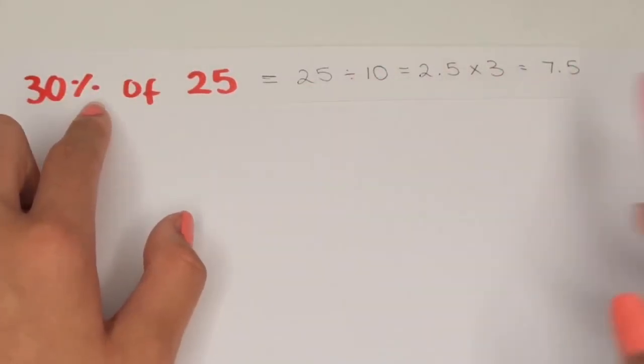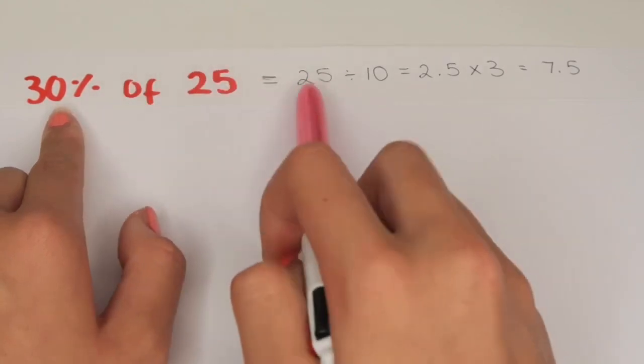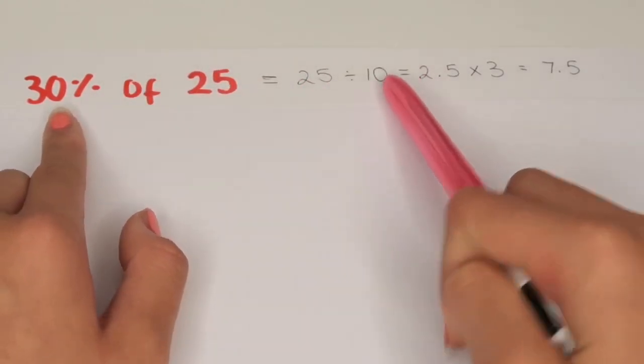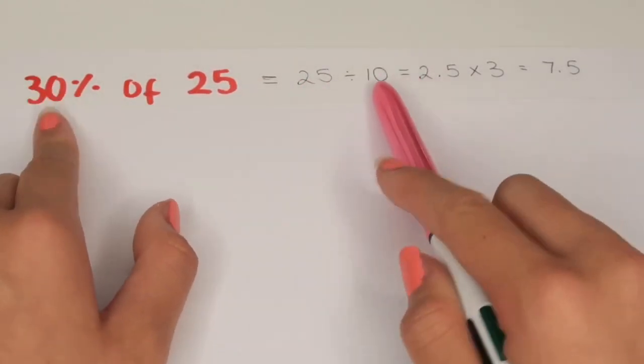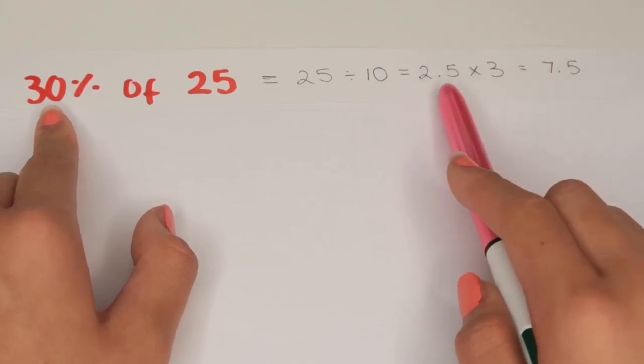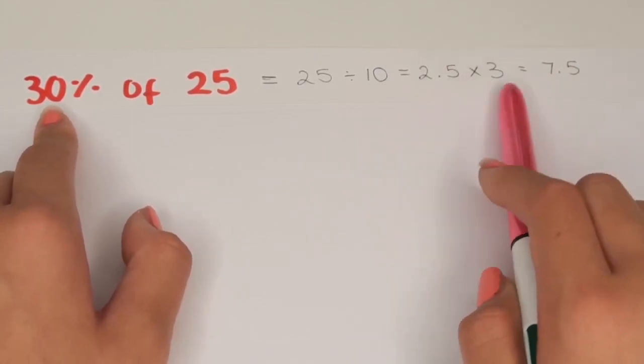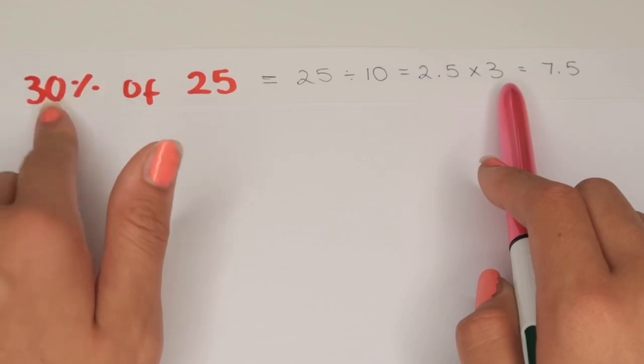For the first one you do 25 divided by 10 to find 10% which is 2.5. You then times this by 3 because you are trying to find 30%. The answer is 7.5.